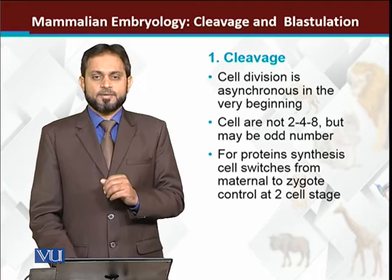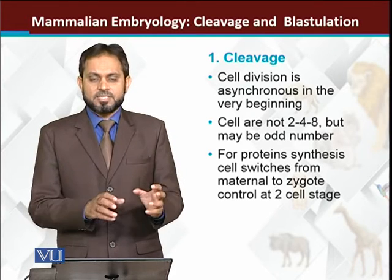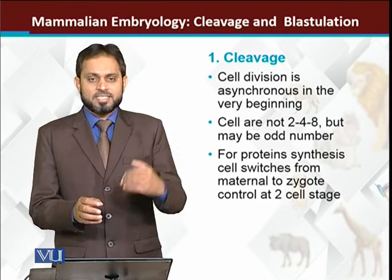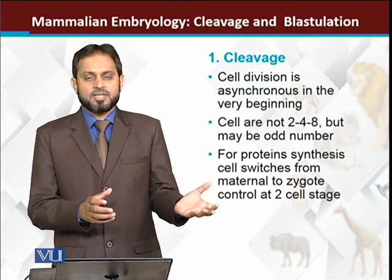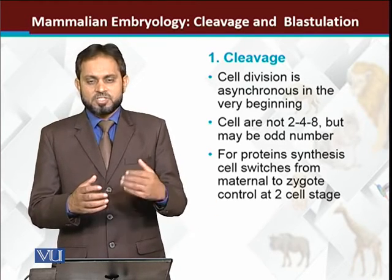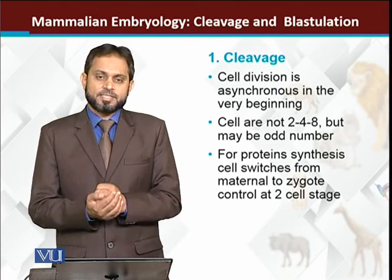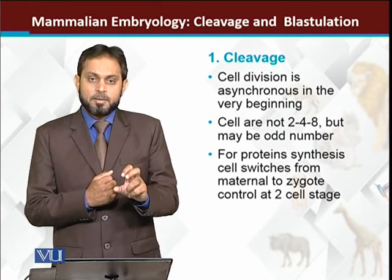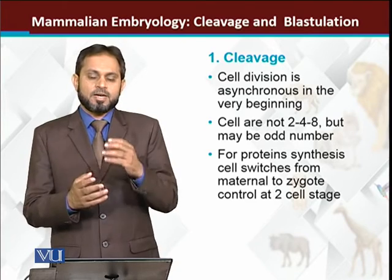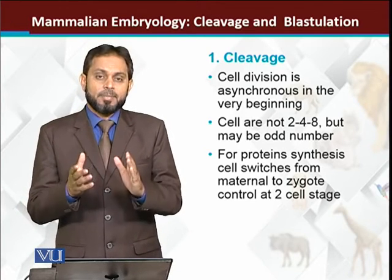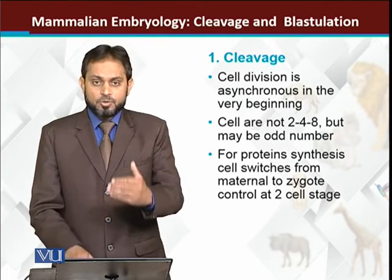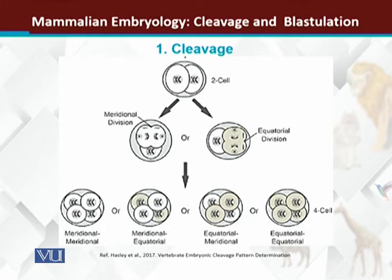Another important difference: in other animals, during cell division, the messenger RNA used for protein synthesis comes from the mother — the egg brings maternal messenger RNA and uses it during cleavage. In the case of mammals, this is not so. The mammalian egg does not bring maternal messenger RNA; instead, when needed, it makes its own messenger RNA and starts cell division. Therefore, maternal effect or maternal dominance is less in mammals.